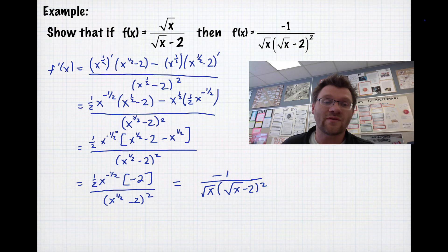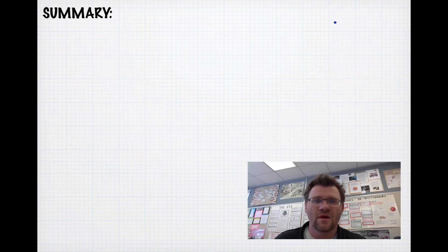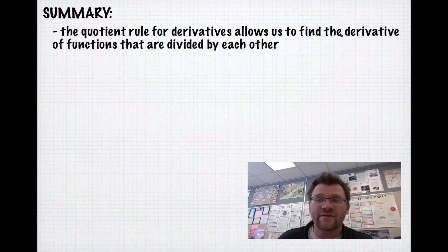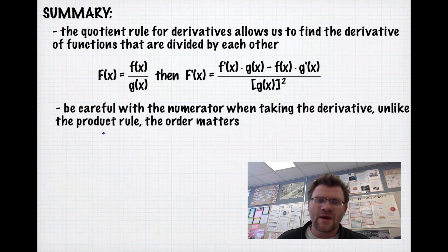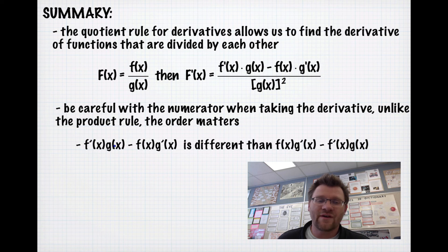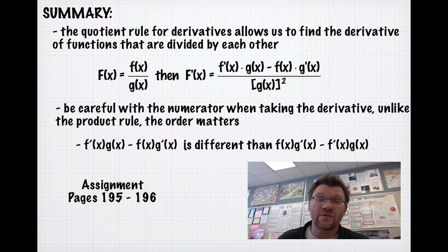Working with fractional exponents and taking them out as greatest common factors is really important — that's why we covered it in the first unit. In summary, the quotient rule lets us find the derivative of functions divided by each other: derivative of the top times the bottom, minus the top times the derivative of the bottom, all over the bottom squared. Unlike the product rule, order matters here — f prime x times g of x minus f of x times g prime x is different if you switch terms. Your assignment is on pages 195 to 196. Good luck and we'll see you in class.